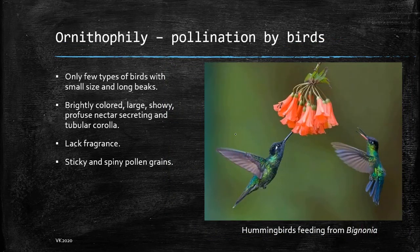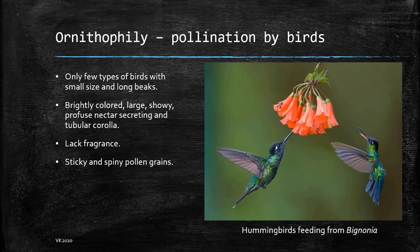Then we have ornithophily — pollination by birds. We don't see many birds that pollinate. Sunbirds and hummingbirds are among the most commonly observed. Very small birds with long beaks are needed because flowers are relatively small. Here you can observe hummingbirds feeding from bignonia. In ornithophily the flowers also need to be really large, showy, and secrete lots of nectar so that the birds spend enough time with the flower to collect the pollen grains. Fragrance is not necessary because birds cannot really smell. The pollen grains are sticky and spiny so that they can attach easily to the bird.